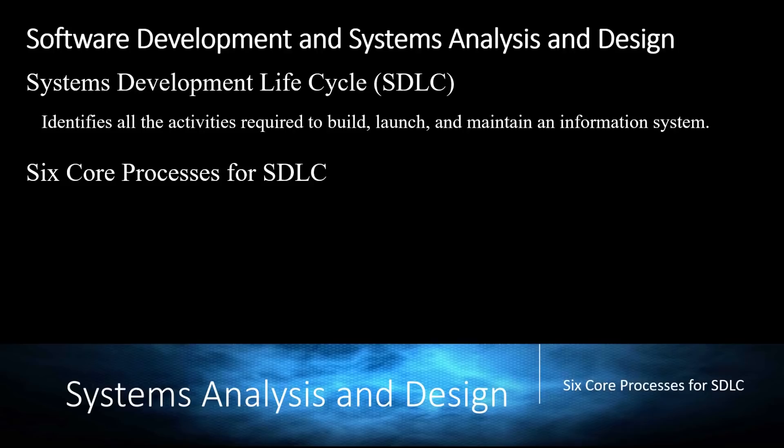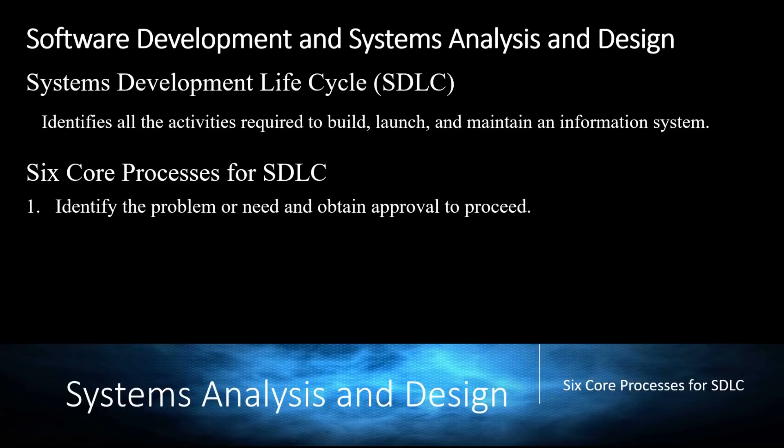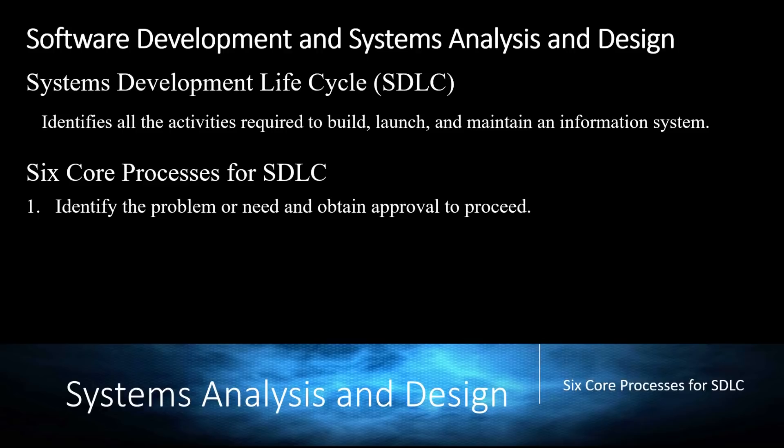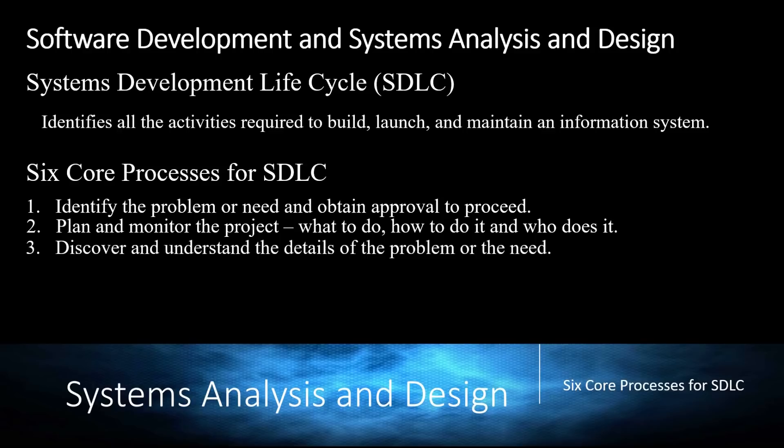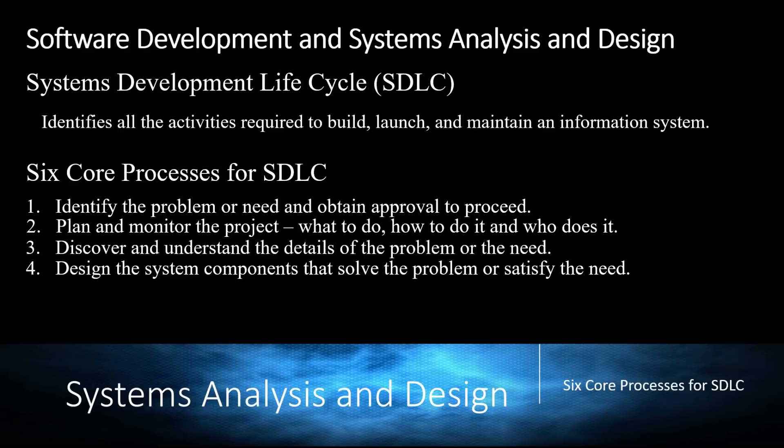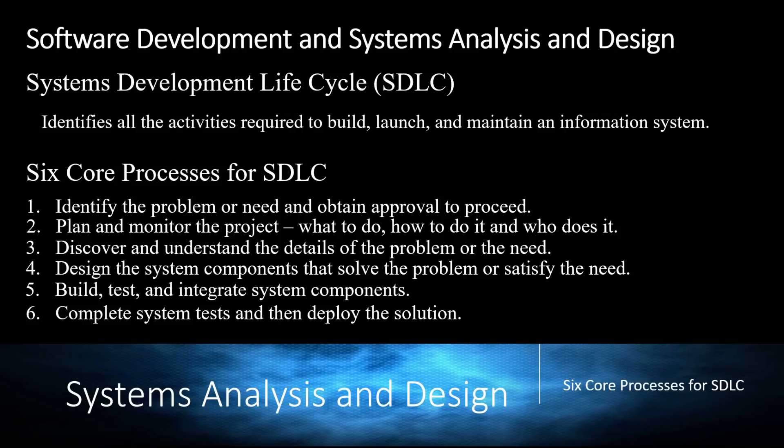The six core processes of SDLC are: first, identify the problem or need and obtain approval to proceed; second, plan and monitor the project — what to do, how to do it, and who does it; third, discover and understand the details of the problem or needs; fourth, design the system components that solve the problem or satisfy the needs; fifth, build, test, and integrate system components; and sixth, complete the system tests and deploy the solution. These six steps are the basic approach to system development and may be adapted for larger projects.